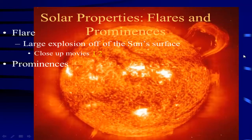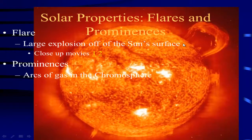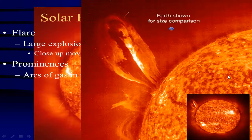You can also have something known as a prominence. Prominences are like a flare but actually loop back in. This is a really big prominence here. Prominences are arcs of gas in the chromosphere — the layer of the atmosphere above the photosphere. Just for size, you can see this large loop in comparison to the size of the Earth. These things are very, very large.